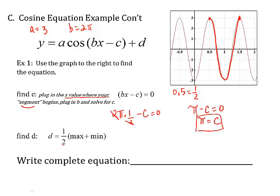Now to find d - d is the maximum value plus the minimum value. So the maximum value was a positive 3 plus the minimum value, well that was negative 3. Well, that's just 1 half times 0 - that's 0. So d is 0.